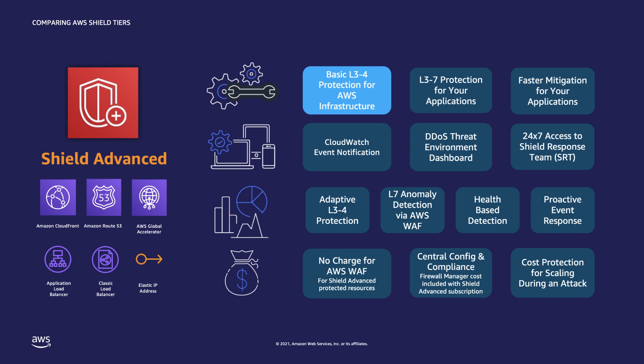Last but not least, you're also eligible for our cost protection policy. If resources under protection need to scale during an attack to absorb attack traffic, you can apply for reimbursement for the extra resources required during DDoS attack mitigation. The resources that can be protected by Shield Advanced include global resources such as Amazon CloudFront, Amazon Route 53, and Global Accelerator, or regional resources such as Application Load Balancer, Classic Load Balancer, or Elastic IP address. Elastic IP can be used to protect your EC2 instances or Network Load Balancer.